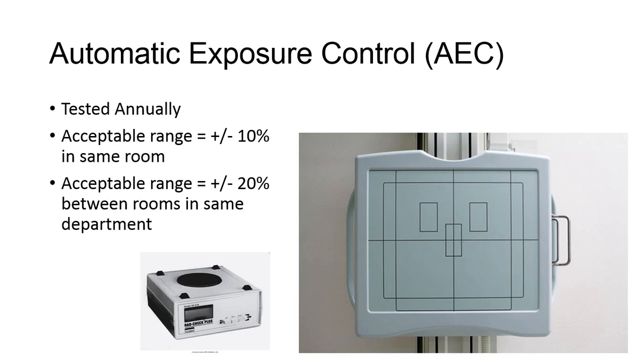Automatic exposure control should be monitored for repeatability. Your textbook suggests five exposures should be taken at the ion chamber to measure the output. The same test should be performed at various density settings when using AEC as well. This should be checked annually with acceptance limits plus or minus 10% within each radiographic room, but with a noted 20% variance is acceptable when comparing different rooms within the same department.